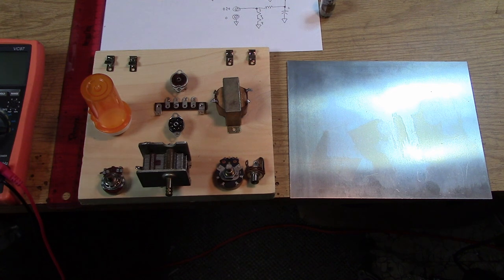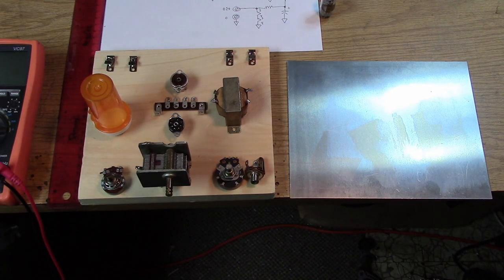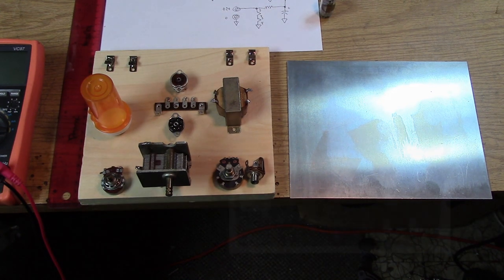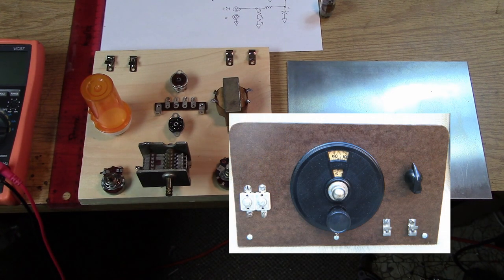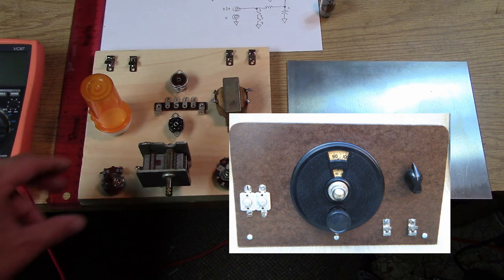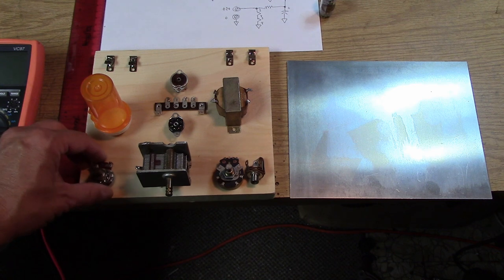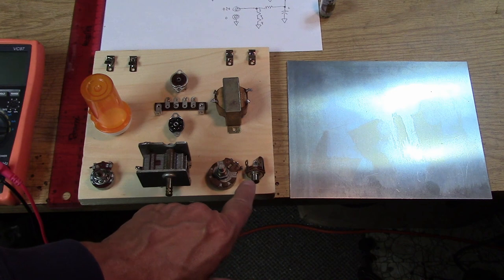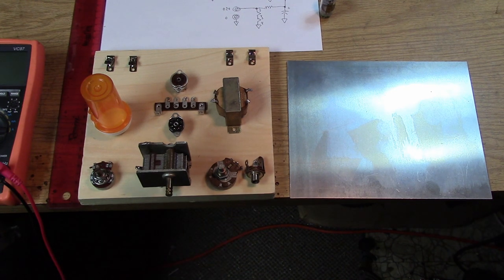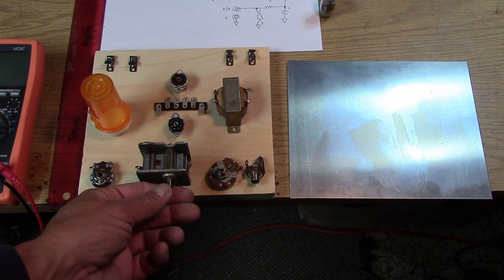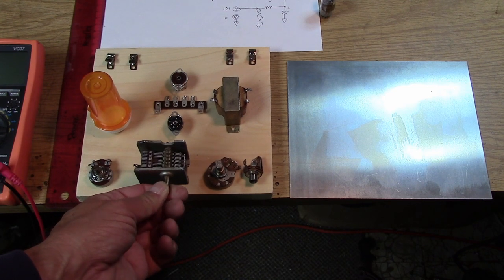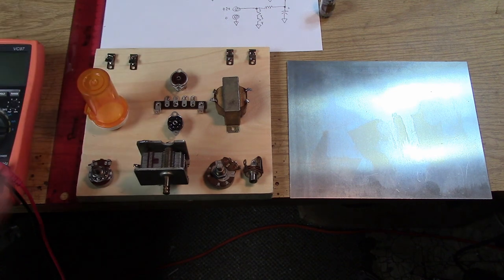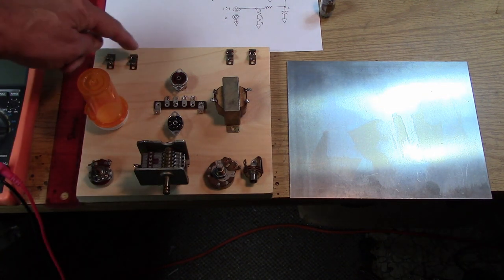We're going to ground that panel and it's going to eliminate those effects. Now could you use a piece of Masonite, like from an old clipboard? Absolutely. That would work wonderfully as well. But it wouldn't give you the shielding effect, but it would give you the stability of a front panel. The front panel also allows you to mount things like your regeneration control, your volume control, your headphone jack, nice to have a headphone jack on the front where you just plug in your headphones, and of course the main tuning dial.